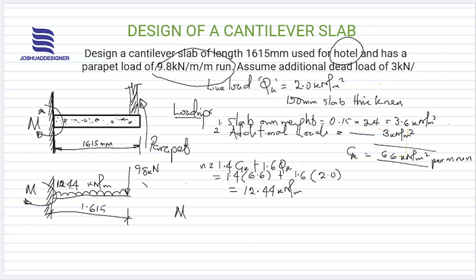To obtain the moment at that point using the relation wL² over 2 plus pL, we have 12.44 multiplied by 1.615 squared all over 2, plus p which is 9.8 multiplied by the length 1.615.